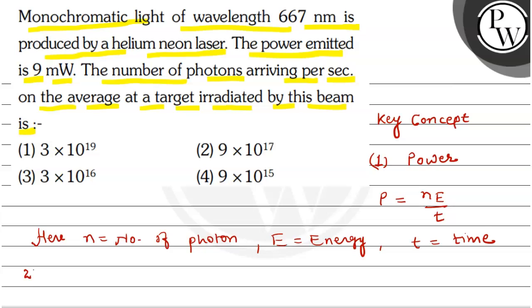Here n is equals to number of photons, E is equals to energy, and t is equals to time. And second expression we'll use, the energy of photon is h nu and this can be written as h c by lambda, where h is Planck's constant, c is velocity of light, and lambda is wavelength.